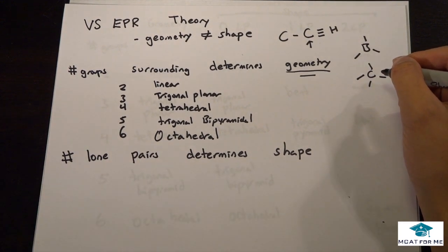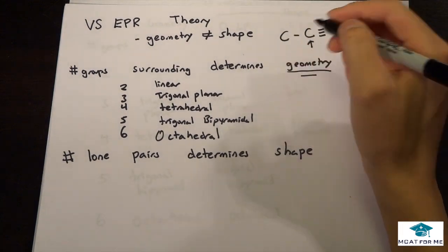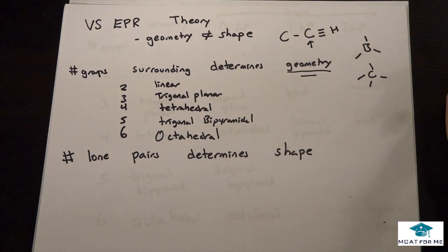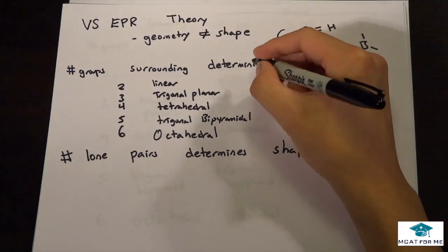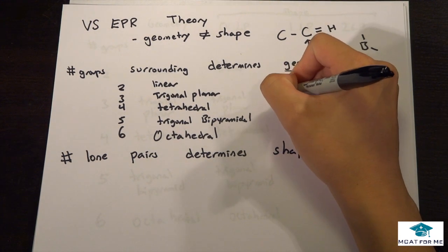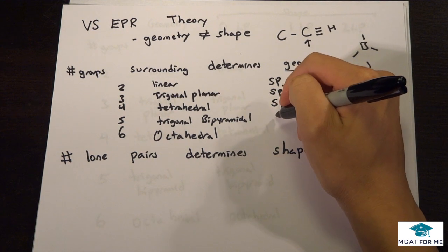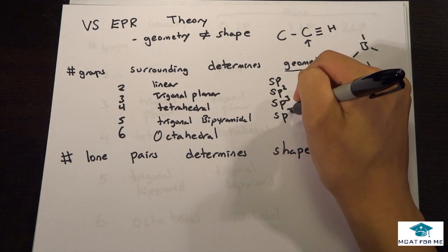And one thing to note about hybridization - if they ever ask you the hybridization, this is something that you just remember and that's it. Linear is sp, trigonal planar is sp2, tetrahedral is sp3, trigonal bipyramidal is sp3d.